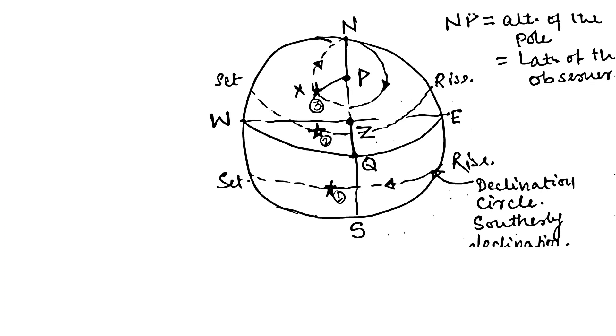Here comes the first condition for a body to be circumpolar: any body with declination opposite to that of the latitude cannot be circumpolar. Here, body number 1's declination is opposite to that of the latitude of the observer.